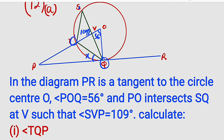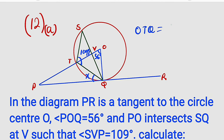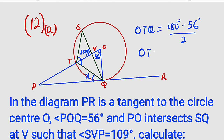Now let's move on to Roman numeral two, where we are asked to find the measure of angle QTS. QTS is a combination of two angles. Let me start with the small angle OTQ. This is an isosceles triangle because OT and OQ are both radii. Since the opposite sides are equal, the base angles are equal. To find angle OTQ, we subtract angle POQ from 180 and divide by 2: that is (180 − 56) ÷ 2 = 124 ÷ 2 = 62 degrees.